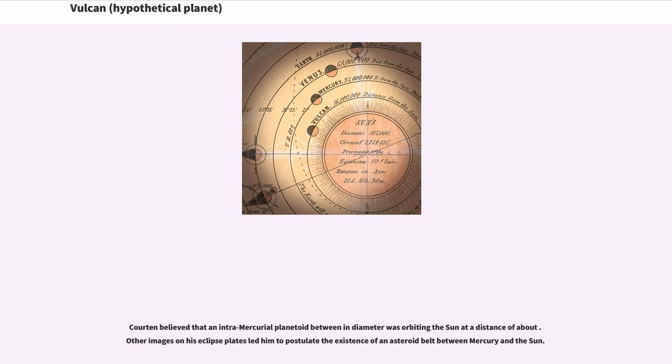Courten believed that an intramercurial planetoid between 100 and 400 kilometers in diameter was orbiting the Sun at a distance of about 0.1 AU. Other images on his eclipse plates led him to postulate the existence of an asteroid belt between Mercury and the Sun.